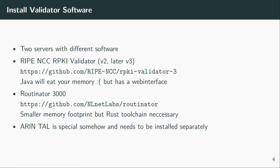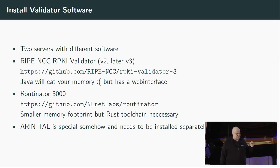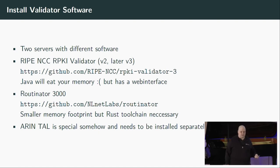After that, you need to install some validator software. Currently we run two servers with different software. On one we run the RIPE NCC's own RPKI validator — we were on version 2 and switched to version 3 because it's Java and it will eat all your memory, and version 3 doesn't eat as much. But still you should put a lot of memory in that box. It has a nice web interface where you can check all the ROAs and see all the RPKI-signed prefixes worldwide.